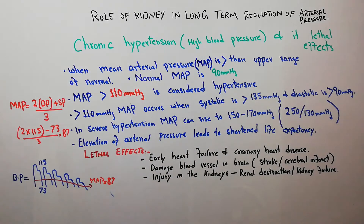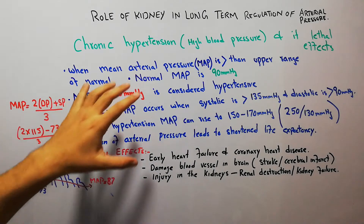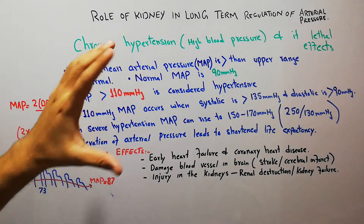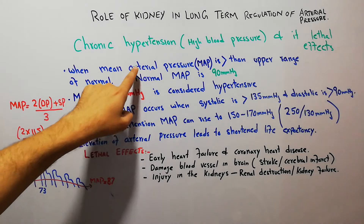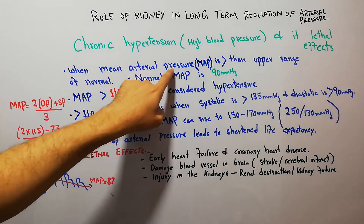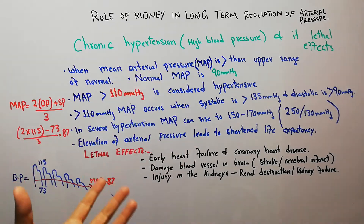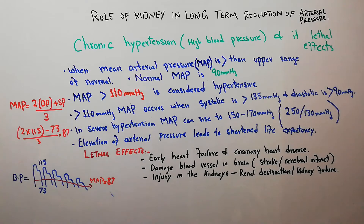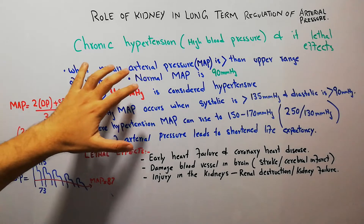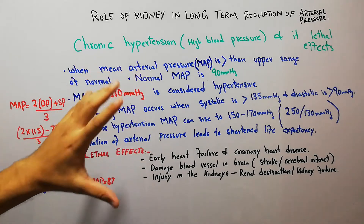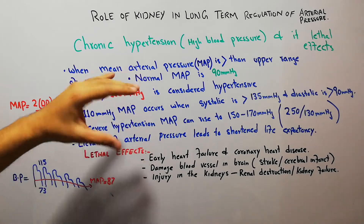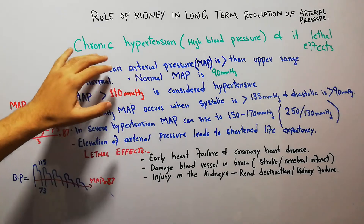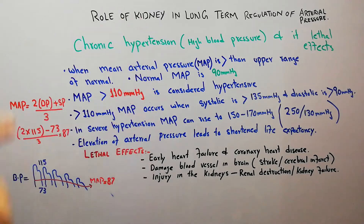We have already discussed arterial pressure and its determinants in previous lectures. Today we are going to discuss the mean arterial pressure and its significance in relation to chronic hypertension.